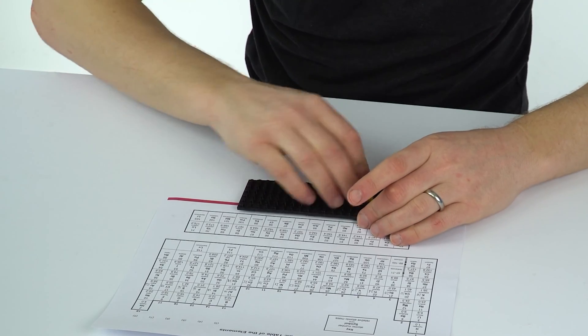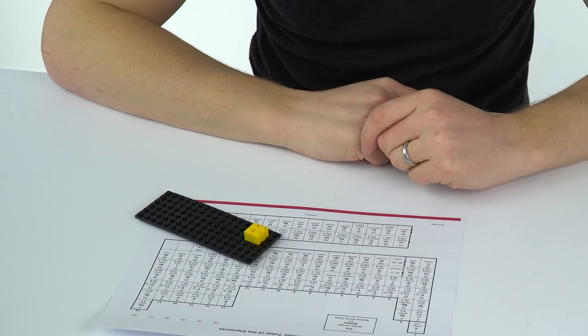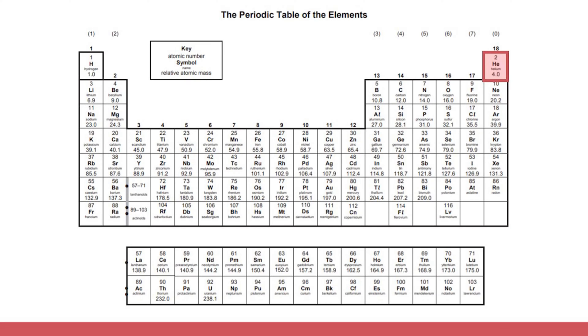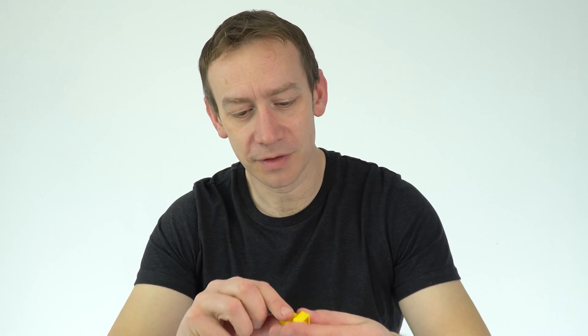For helium it has two protons and the number 4.0 underneath is the average atomic mass and that's because on average helium has two neutrons. So I'm going to use my red bits of LEGO to be my neutrons and we've got two of these ones here to be my two protons and in the nucleus we have two protons and two neutrons.